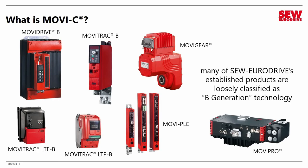Many of SEW EuroDrive's established products are loosely classified as what we in-house call the B generation technology. Possibly you're familiar with some of these if you've been an SEW customer. The B generation includes things like the low-end variable frequency drives such as MoviTrack LTE-B, MoviTrack LTP-B, and the MoviTrack B, and then the high-end MoviDrive B, which has been our flagship product for many years. We also have specialized products like MoviPro and decentralized products such as the MoviGear, designed for logistics conveyor lines.